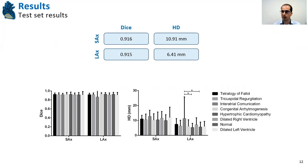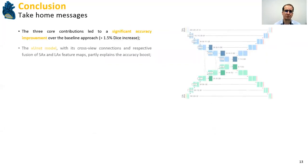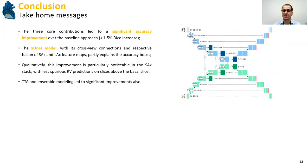So as a take-home message, the three core contributions led to a significant accuracy improvement over the baseline approach, with the XUnet model partially explaining these accuracy boosts. And more importantly, when we qualitatively look at the segmentation result, these improvements seem to be particularly noticeable in the short axis stack, as we have less spurious right ventricle predictions on slices above the basal slice. So it's like the long axis stream helped the short axis stream learn which slice to segment and which not to segment. And then the usage of test time augmentation and ensemble modeling also led to significant improvements.